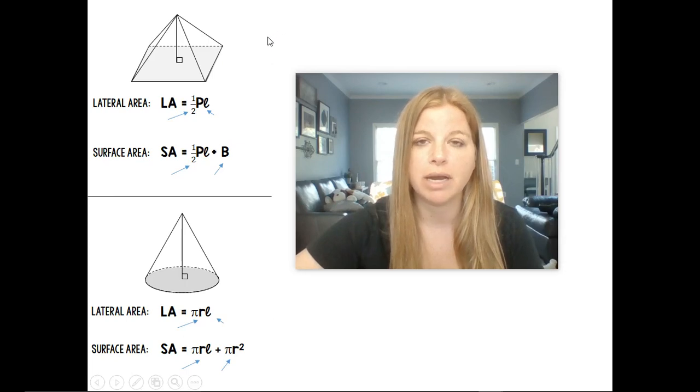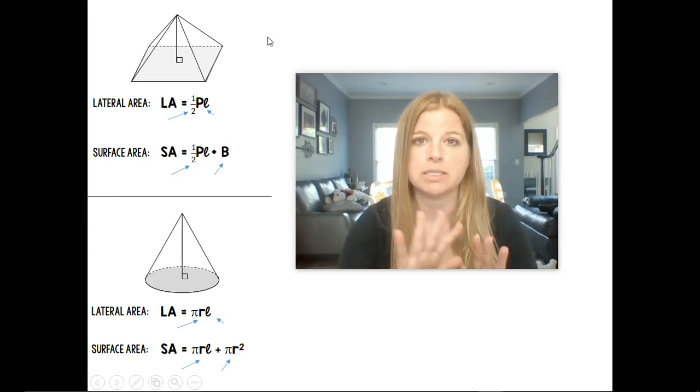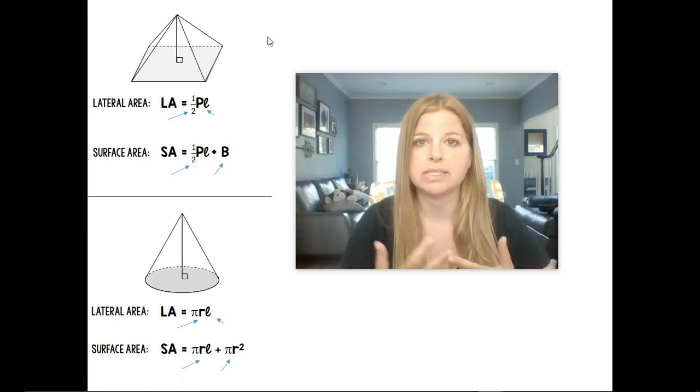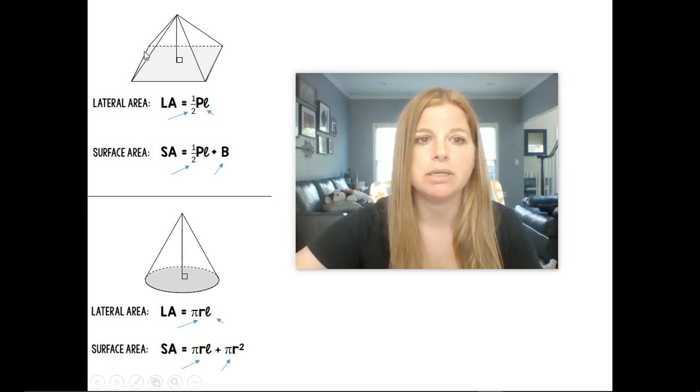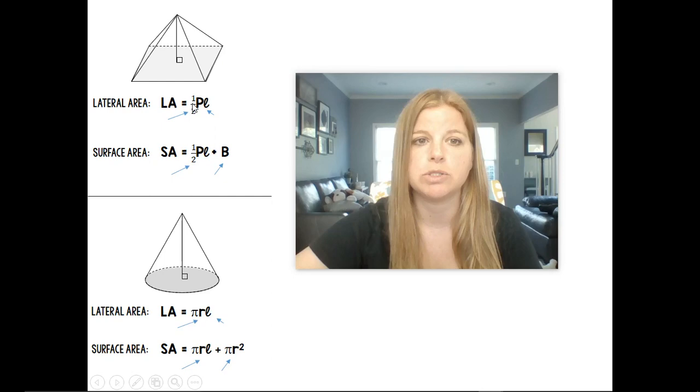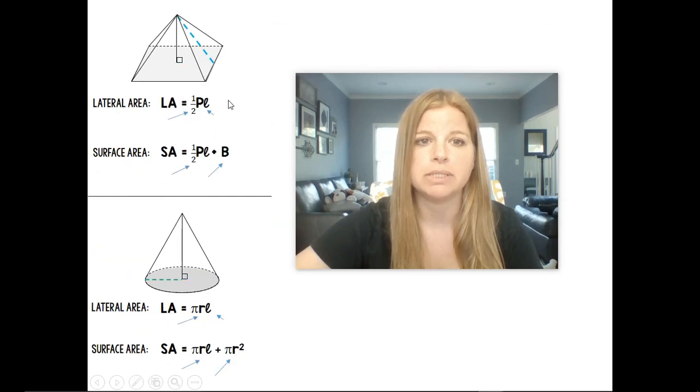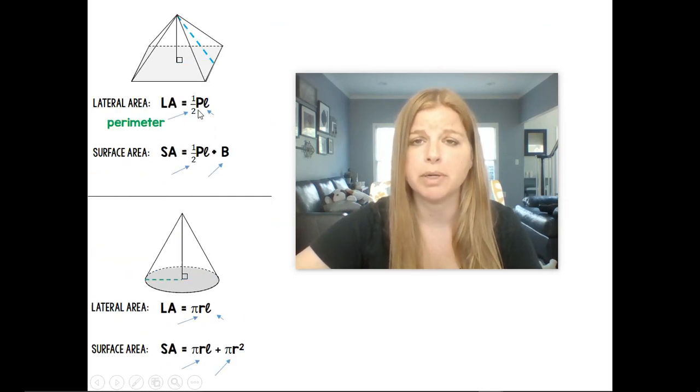So first of all, lateral area we learned in a previous lesson is about the area of the sides or faces that are not a base. So here it says lateral area is equal to one half times the perimeter, perimeter of the base. We learned that value for P in a previous lesson.